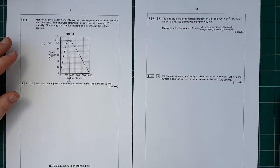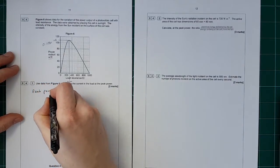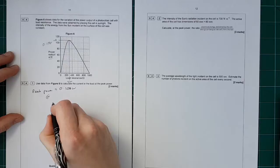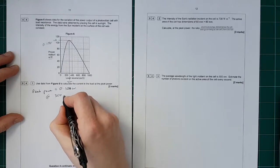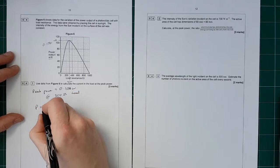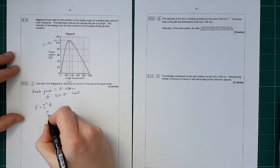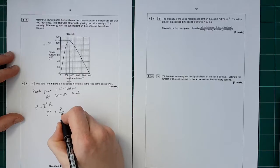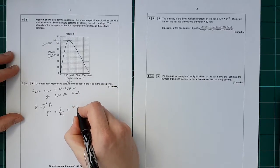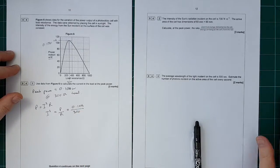We need an equation. Peak power is equal to 0.108 watts at 300 ohm load. So if we use P = I²R, we get I² = P/R, which equals the power, 0.108, divided by the load, which is 300.